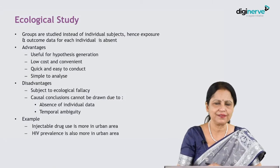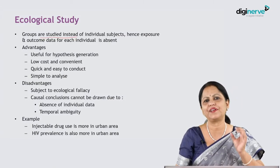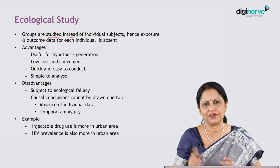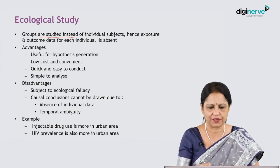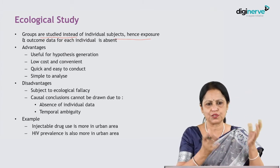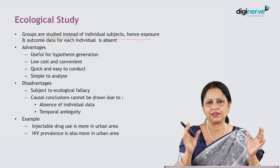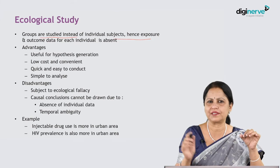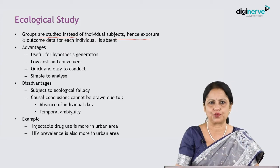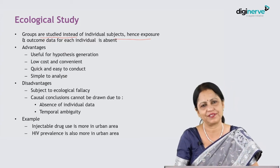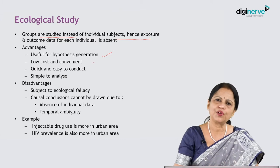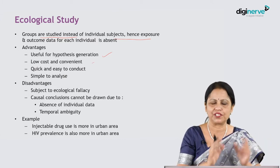An ecological study is research where groups are studied instead of individual subjects — one group having the exposure, the other not, or one group having the disease and the other not. Exposure and outcome data are not for individual subjects. This type of study is useful for hypothesis generation; it is low cost, convenient, quick, easy to understand, and simple to analyze, as we study whole-group population data.